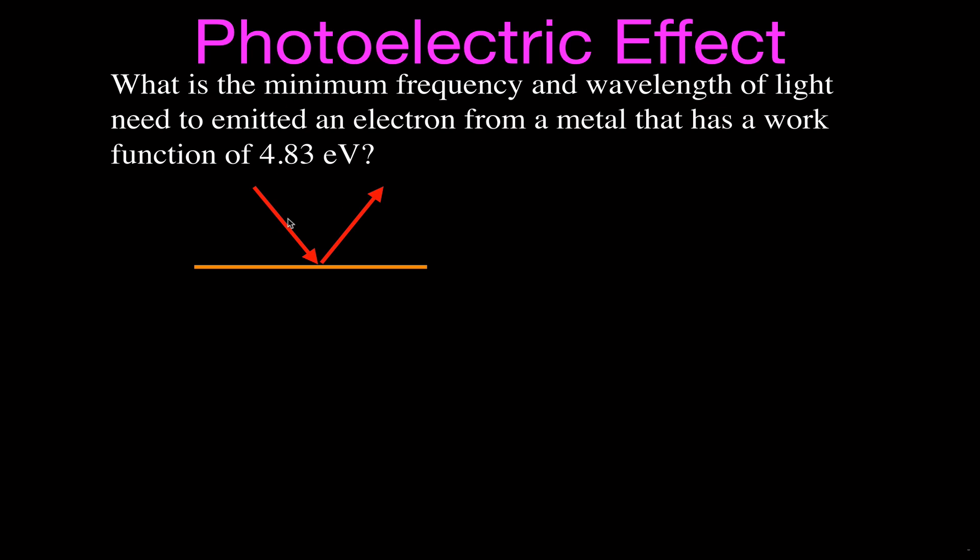Now, it says in the problem that the work function for this metal plate is 4.83 electron volts, so I might just write that down like that. Then it says, what is the minimum frequency and wavelength of light? So that's this incoming light, these incoming photons of light, and we want to know what is the frequency needed to emit an electron from that plate.